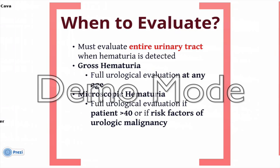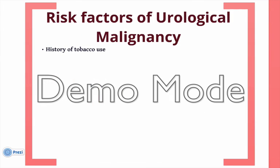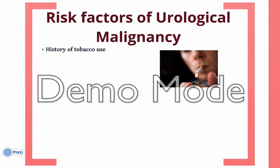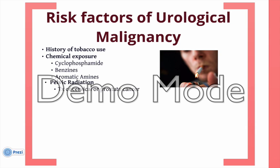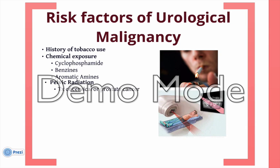Gross hematuria at any age generally requires a full urologic evaluation. Microscopic hematuria requires full urologic evaluation, typically when a patient is over the age of 40. In some instances, people under the age of 40 do require full urologic evaluation. Those patients would be people with a risk factor for urologic malignancy. Those risk factors include any history of tobacco use, history of any chemical exposure, specifically cyclophosphamides, certain benzenes or aromatic amines, and history of pelvic irradiation, such as patients who have had cervical cancer treatment or prostate cancer treated with external beam radiation.